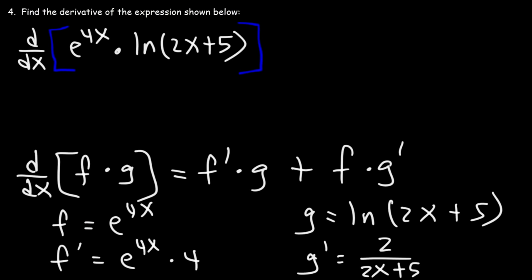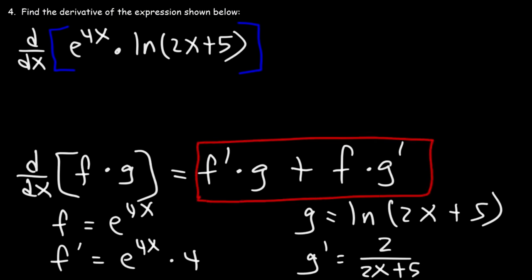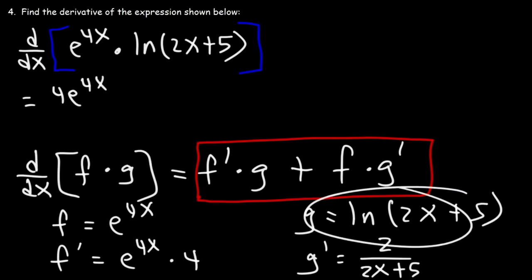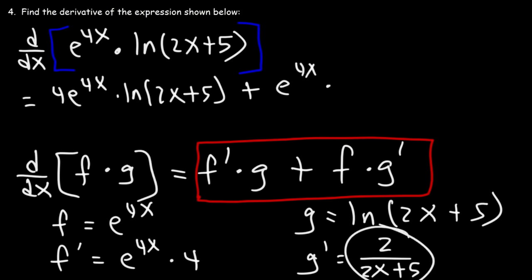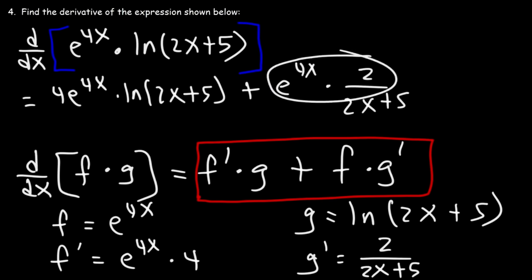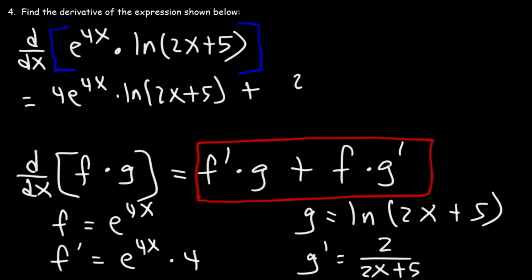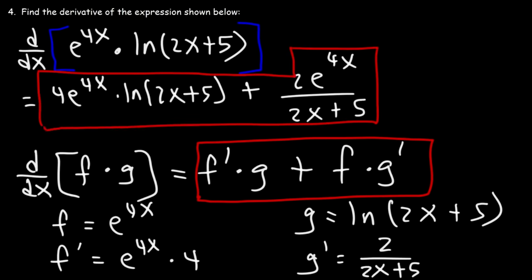Applying the product rule: the derivative is f prime times g plus f times g prime. That gives 4e to the 4x times ln of 2x plus 5, plus e to the 4x times 2 over 2x plus 5. We can simplify the second term as 2e to the 4x over 2x plus 5, and that is the final answer.